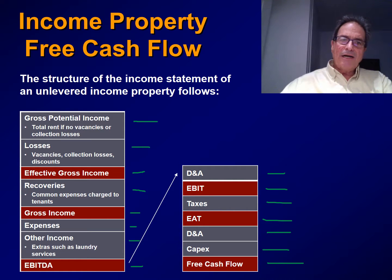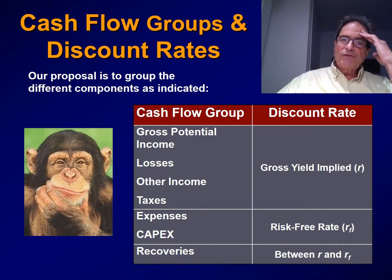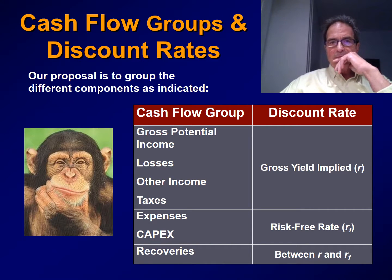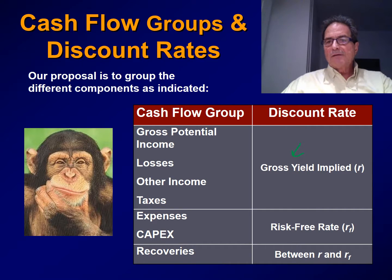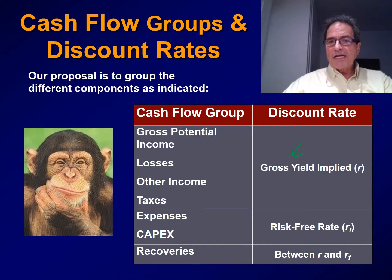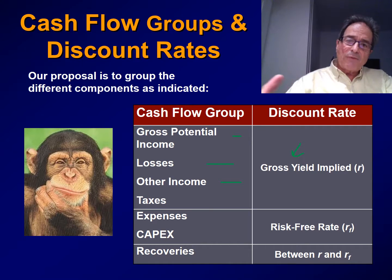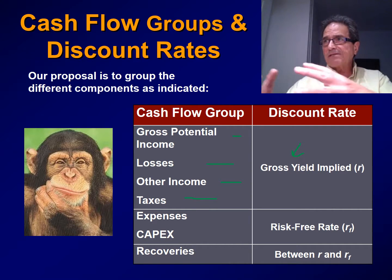So we have identified the different components of the income statement of an income property. What we are proposing is to group these components into three categories. The first category will use the gross yield implied rate R as the discount rate, because all these items are closely correlated with the rent. For instance, the gross potential income is the rent itself. Losses are directly tied to the rent. Other income depends on the number of tenants and the rent. And taxes depend fundamentally on the income, because expenses are pretty fixed.